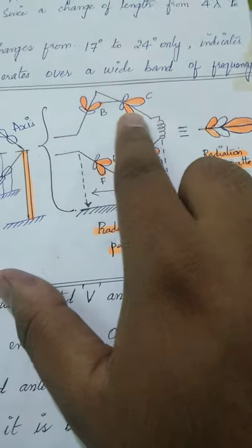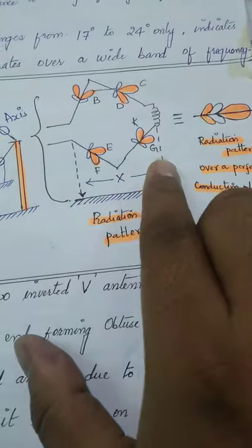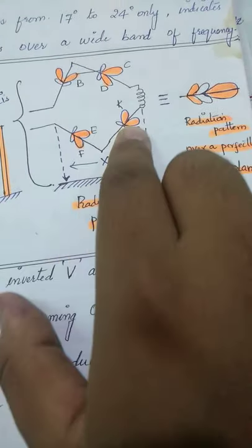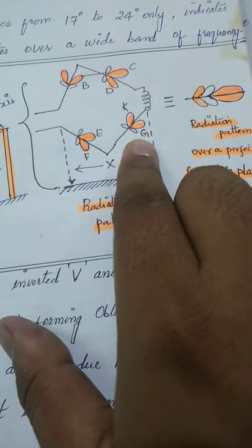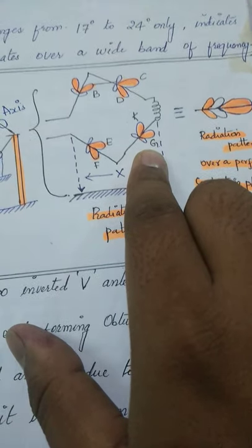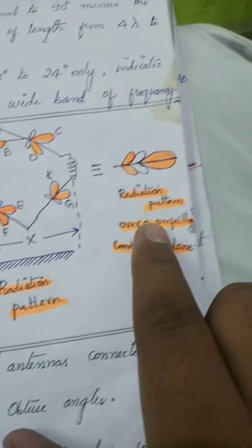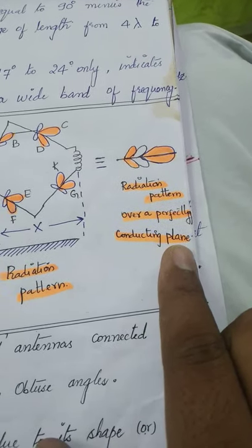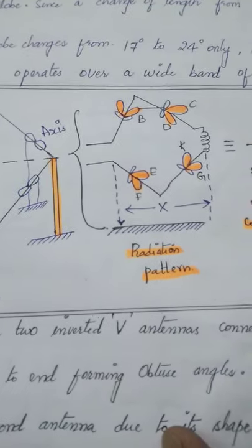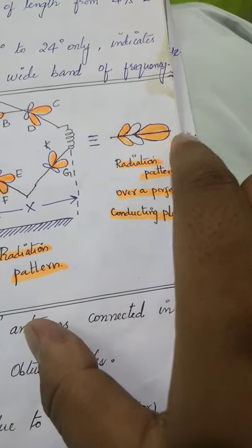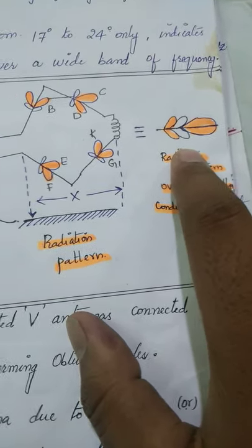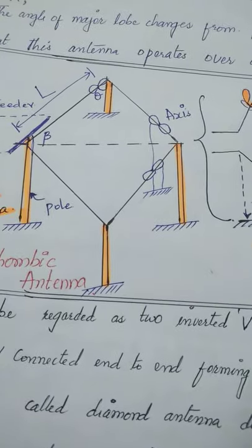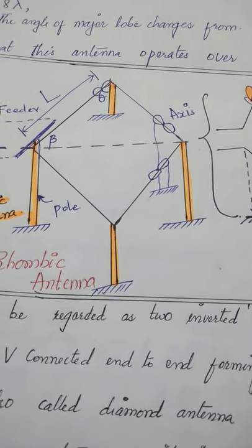As we can see over here, there will be a pattern of BD, FG, this is our complete rhombic shape. For each particular pole, we are getting one radiation pattern. As per that, we will be having a radiation pattern over a perfectly conducting plane. How it is going to work, how it is having the main lobe and the side lobe, at what angle this is going to work and how it is going to work as a traveling waveguide.